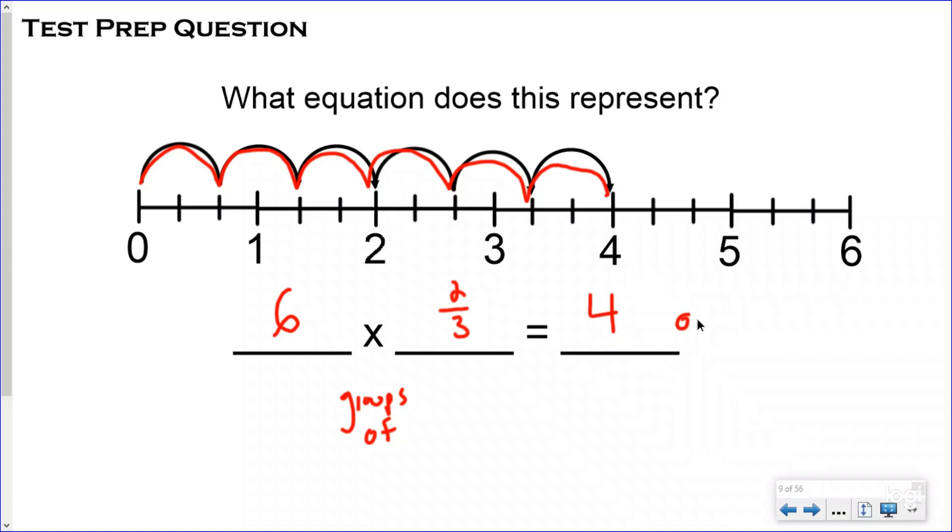Or you could write this, my denominator was three, as three, six, nine, 12/3. And then when you divide 12 divided by three, you would still get four wholes.